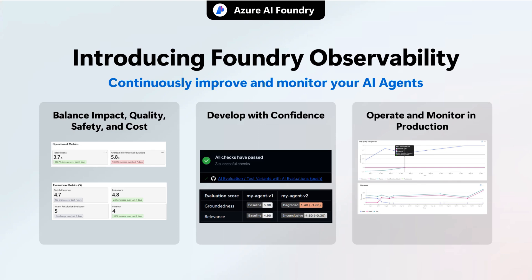In production, daily quality scores and token consumption data provide straightforward indicators of ongoing performance and resource use. For a full demonstration of these observability capabilities, check out the session where this is brought to life with concrete examples.